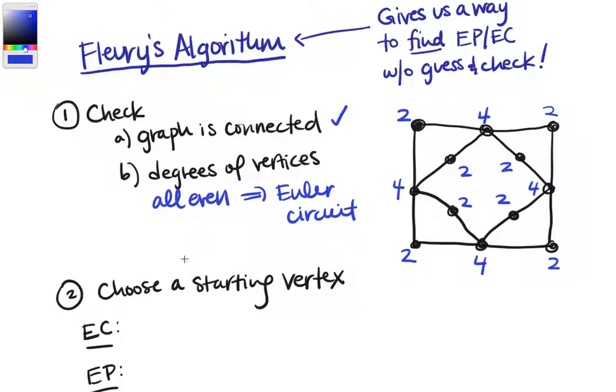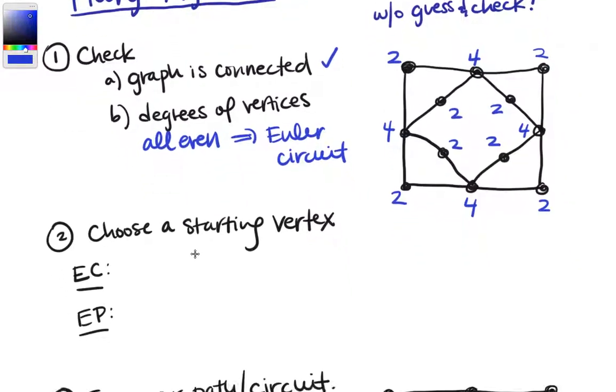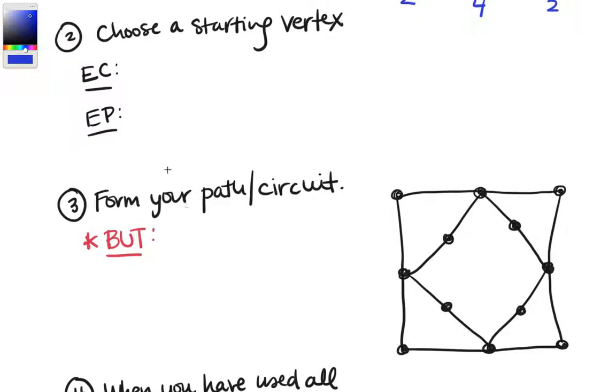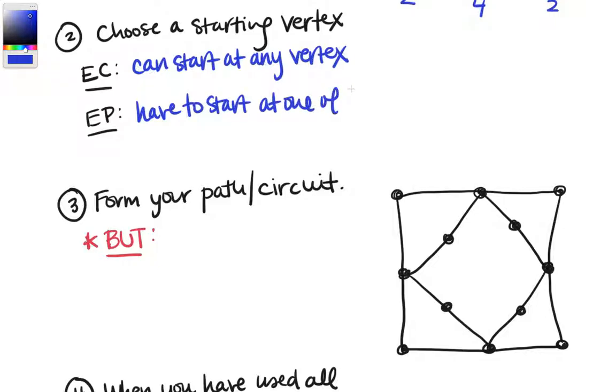Next thing we're going to do is choose a starting vertex for our graph. And if we have an Euler circuit, you can start at any vertex. If you have an Euler path, you have to start at one of the odd vertices. So the two odd vertices will be the start and end of the path.